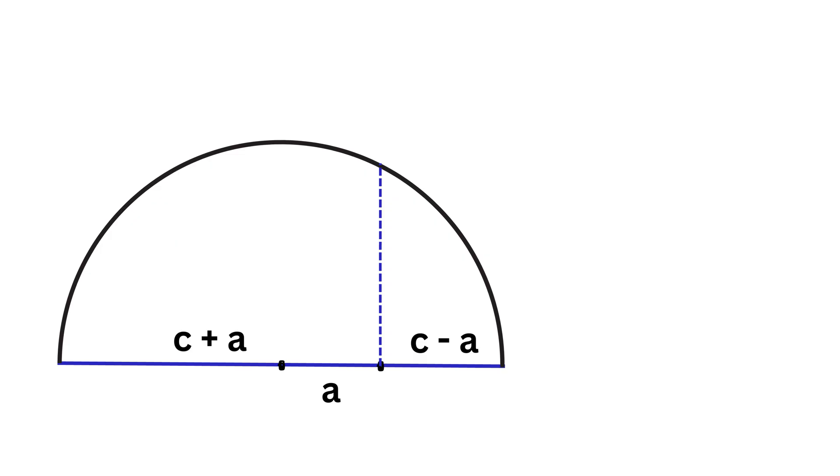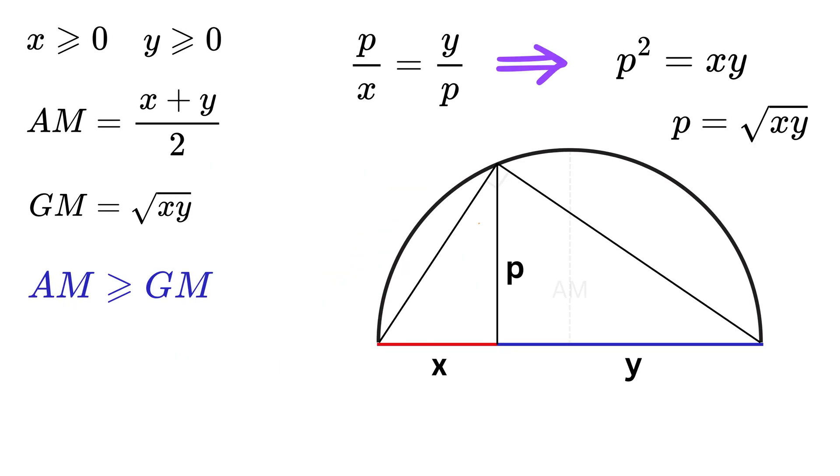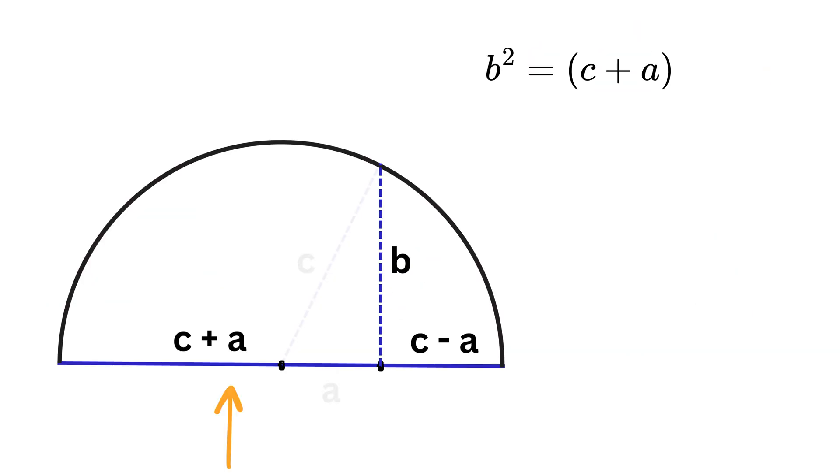Now again draw this perpendicular chord like this and label its length as b. Now draw this hypotenuse such that its length is the same as the radius of this semicircle or c.